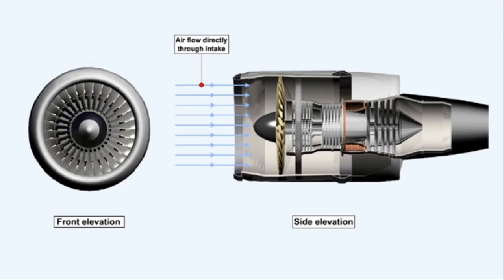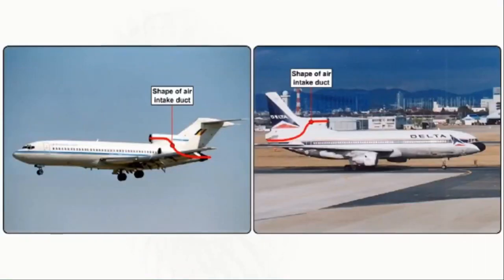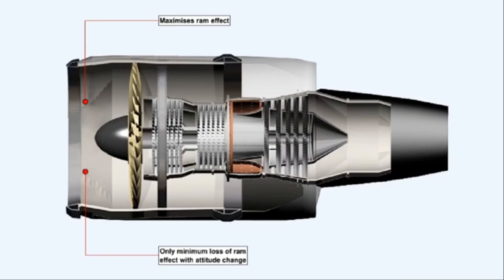The simplest form of intake is a single-entrance, circular cross-section pitot type, where air flows directly through the intake when fitted to wing-mounted engines — for example on the Boeing 727 or the Lockheed TriStar. Crosswind takeoffs can cause the airflow through this type of intake to become unstable. The pitot intake maximizes the use of ram effect due to the aircraft's forward speed and suffers only a minimum loss of ram pressure as aircraft attitude changes.